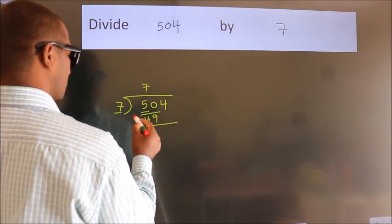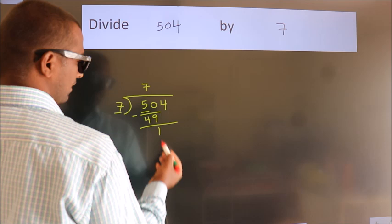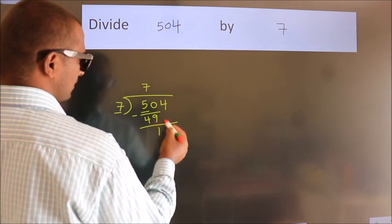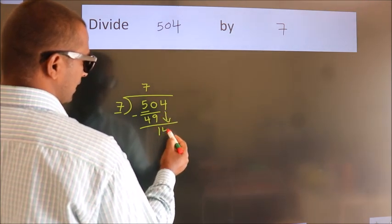Now we should subtract. We get 1. After this, bring down the beside number. So, 4 down.